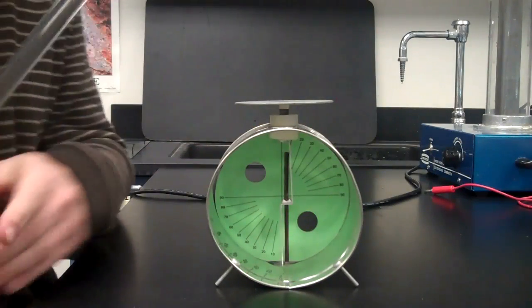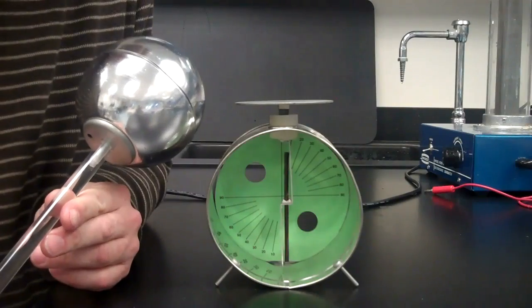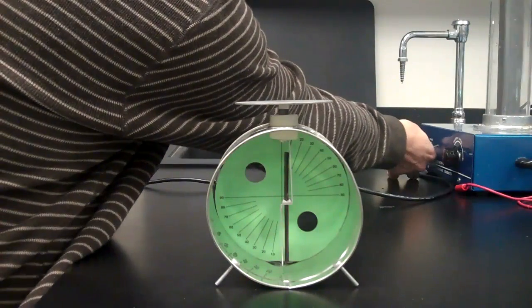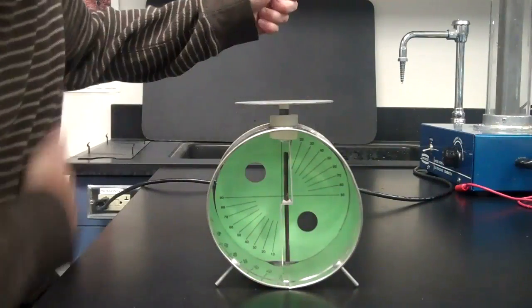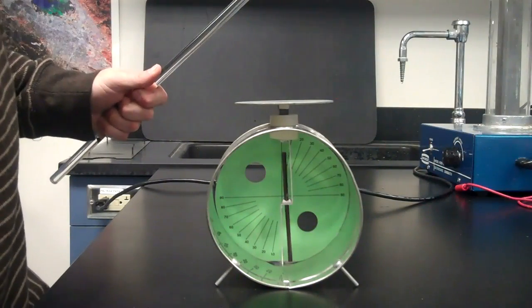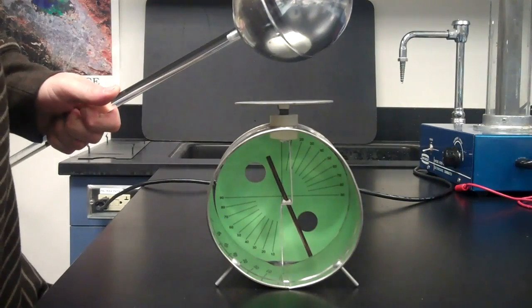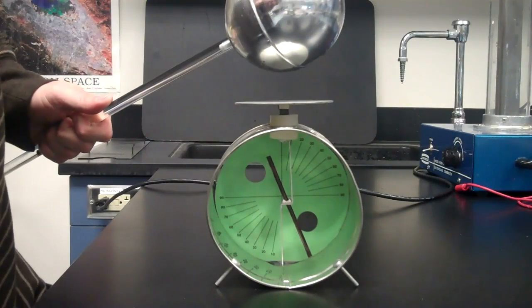I'll start off by charging the wand of my Van de Graaff generator with the Van de Graaff generator so that now the wand is negatively charged. As I bring it close to the electroscope, you see the arm is deflected.